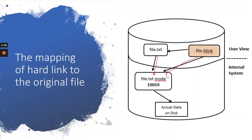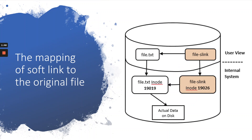Now let's look at the differences in the mapping of soft link. The mapping of soft link to the original file is shown in the figure. We have the original file, which is file.txt, and file.txt has the inode of 19. Creating a soft link file will create an additional inode file, with a number of 19.029. This particular file will operate by pointing to the original file.txt inode in accessing the actual data on the disk.